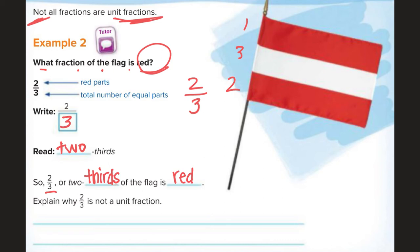Explain why two-thirds is not a unit fraction. Well, because a unit fraction has a numerator, remember numerator, top number, of one, right? So, two-thirds is not a unit fraction because the numerator is not one. That simple.